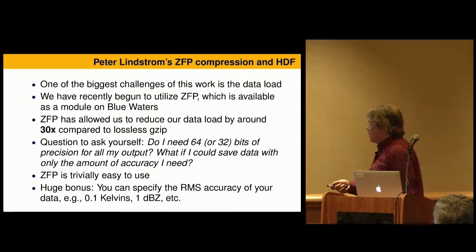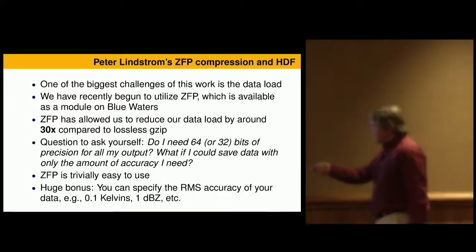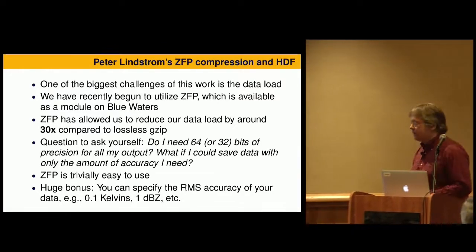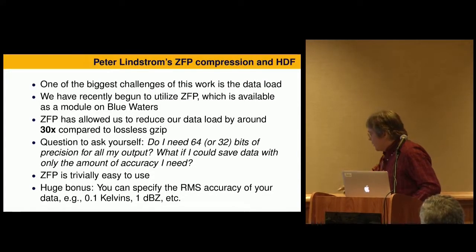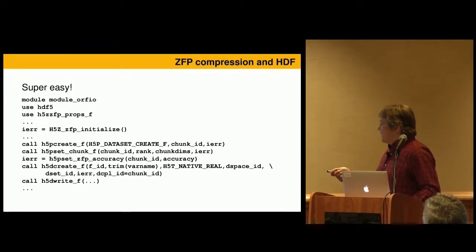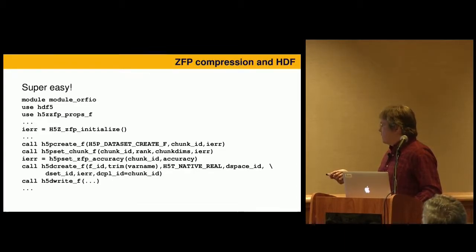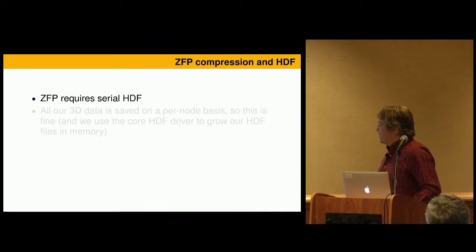For me, the biggest bonus is that you can basically specify the accuracy of your data in terms of the data itself — for example, 0.1 Kelvins or 1 dBZ if you're doing reflectivity — and then the compression handles it. It's pretty easy to use. You use this module, initialize it, create a property list, turn chunking on in HDF, create your dataset with a little extra argument, and then when you write your data, it undergoes the compression. It's pretty easy to stick into your code.